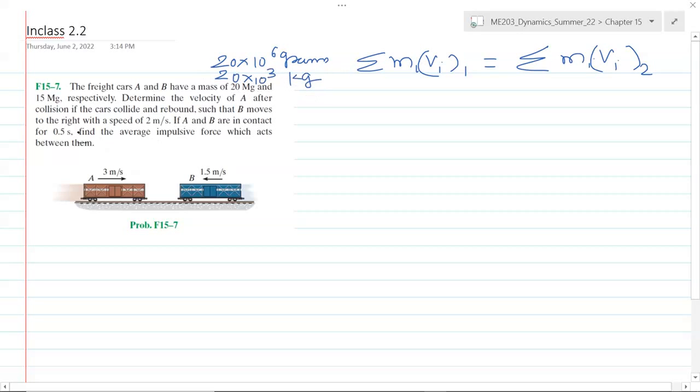Determine the velocity of car A after collision if the cars collide and rebound such that B moves to the right with a speed of 2 meters per second. If A and B are in contact for only 0.5 seconds, find the average impulsive force that acts between them.